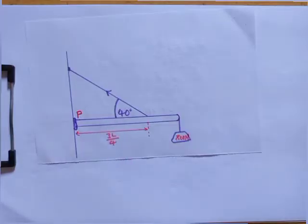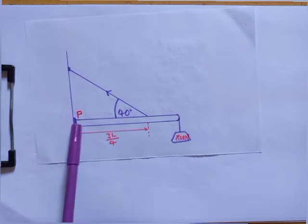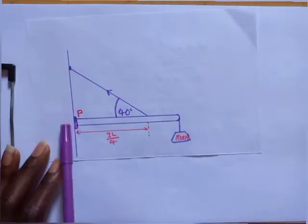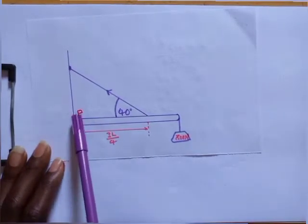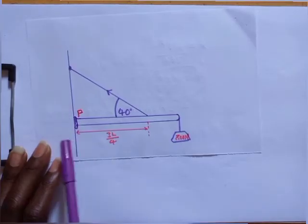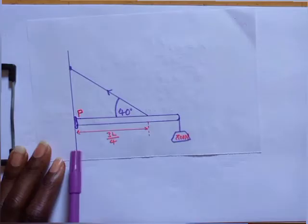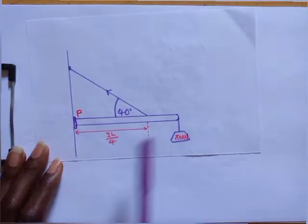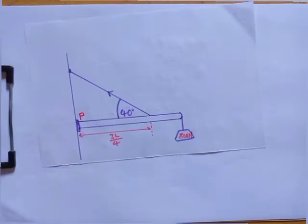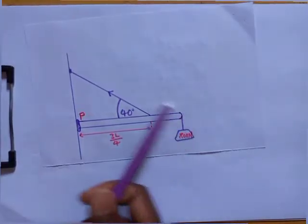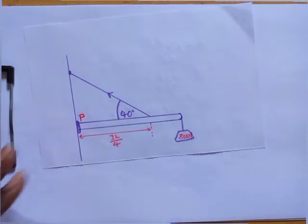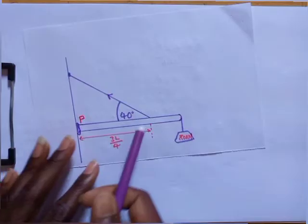Looking at the diagram, we have a distance of 3l/4 starting from the point P where the beam is hanging — we call this a hinge. At the hinge there are two forces acting on it. From this point to where the rope is tied, we have a length of 3l/4. The total length of the entire beam is l.